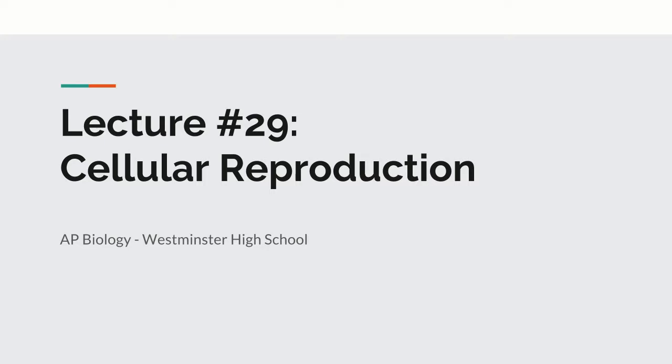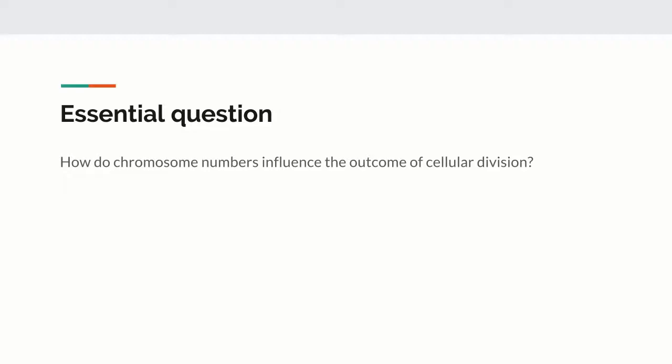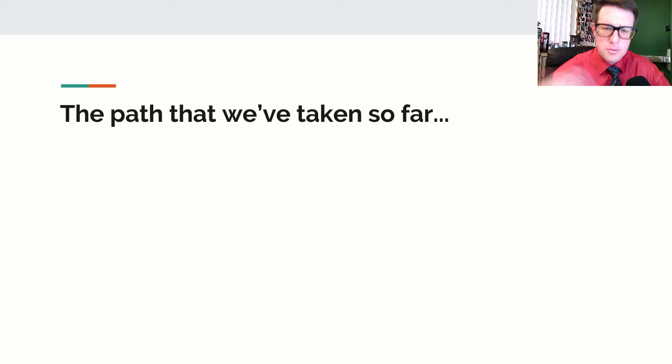Welcome back for more AP Biology. This time we're going to deal with some cellular reproduction, and in particular, how chromosome numbers go along with cellular division. They do test you on this a little bit from the book, so it helps to have a sense of where we've been and how things are integrating.